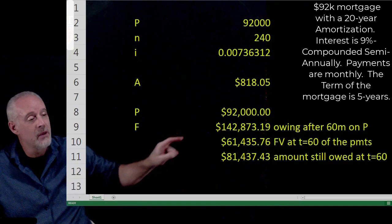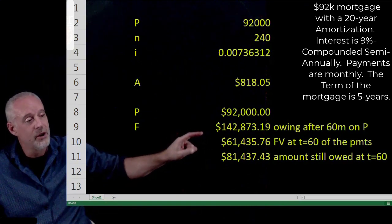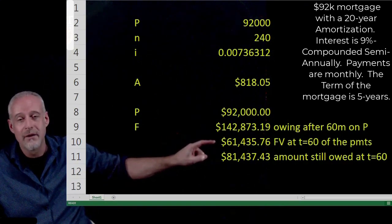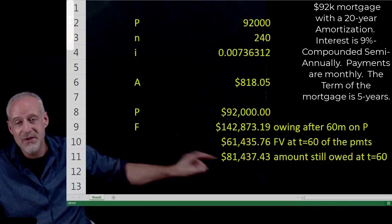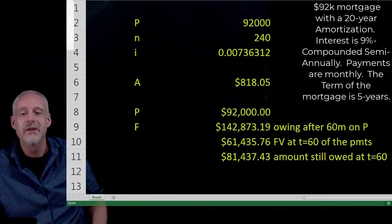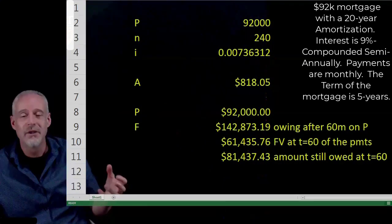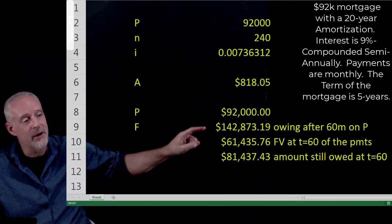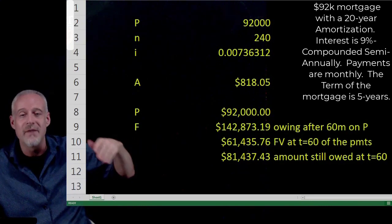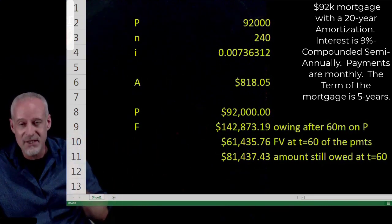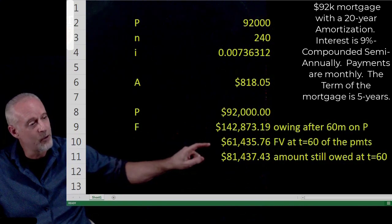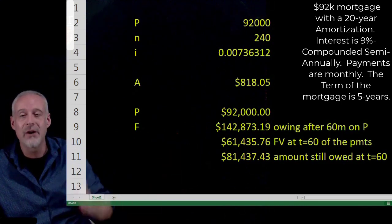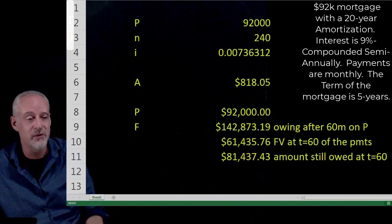So, this is what is owed. This is what we've paid. This is what is still owed. And this is staying true to the principles of the time value of money, where $142,873, that is a value at time T equal to 60. $61,436, that is a value at time T equal to 60. So, I can subtract one of those values from the other.